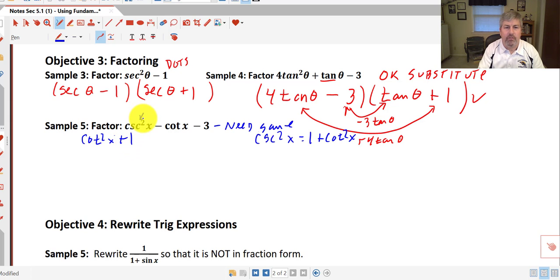We can substitute cotangent squared x plus 1 for our cosecant squared x minus cotangent x minus 3. Combine my 1 and my 3, and that gives me cotangent squared x minus cotangent x minus 2. And now I can factor.